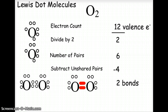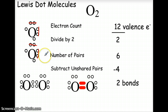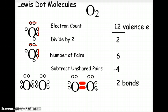Continuing with diatomics, let's look at oxygen, O2. Oxygen has six valence electrons, so in an O2 molecule you have 12 total valence electrons. Dividing by two tells us we need six pairs. Looking at each atom, we count one, two, three, four unshared pairs. Subtracting four from six gives us two bonds needed. Those two unpaired electrons on each oxygen share in the middle — those two lines represent four electrons being shared, or two pairs. This is the Lewis dot structure for diatomic oxygen, O2.